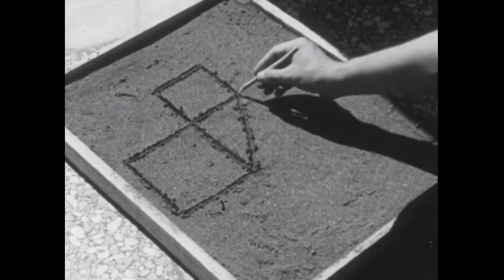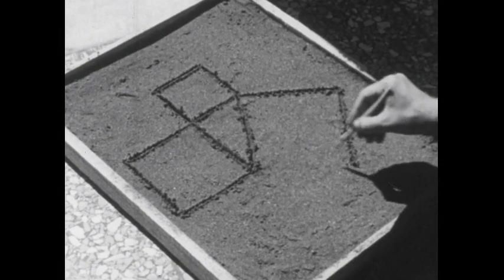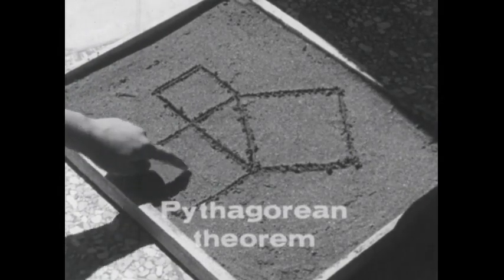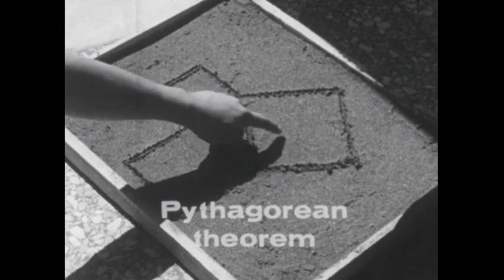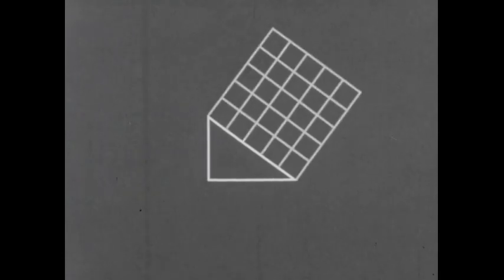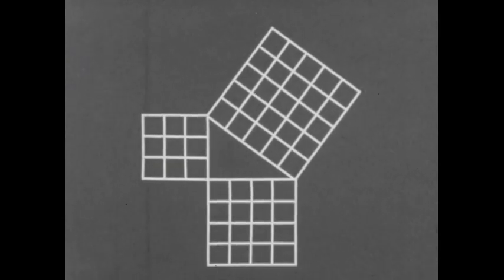One of the most important theorems about triangles was credited to the Greek mathematician Pythagoras. It became known as the Pythagorean theorem. The Pythagorean theorem applies to all right triangles. The hypotenuse is the side opposite the right angle. In the theorem, the area of the square on the hypotenuse is equal to the sum of the areas of the squares on the other two sides.